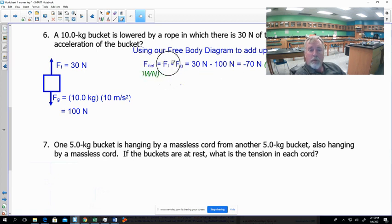And we're gonna see that our net force here is F tension minus Fg. Remember Fg is pointed down so we're gonna subtract it. That's a negative direction. 30 Newtons minus 100 Newtons. That's gonna give us negative 70 Newtons.